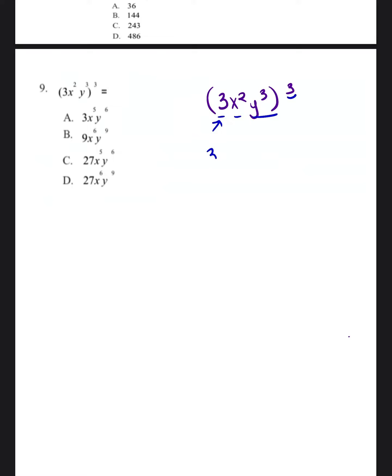So it would be 3 cubed, then it would be x to the squared cubed, and then it will be y cubed to the third power. So I'm going to deal with them one at a time. So 3 cubed means 3 times 3 times 3. 3 times 3 is 9. 9 times 3 is 27.